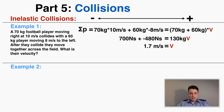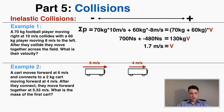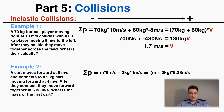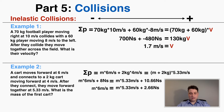Let's do an inelastic example where both objects move in the same direction. A cart moves forward at six meters per second and connects with a two kilogram cart moving forward at four meters per second. After they connect, they move forward together at 5.33 meters per second. What is the mass of the first cart? Before the collision the two momentums are set up with M as the unknown mass, and after there's a single momentum with the total mass times total velocity. Solving for mass gives four kilograms. For inelastic collisions, always treat the two objects after collision as one object with mass equal to the sum of the two masses.